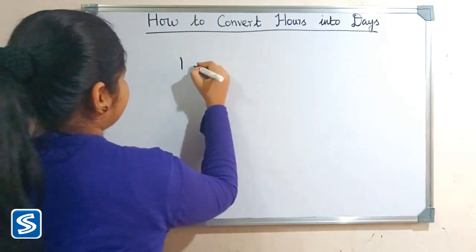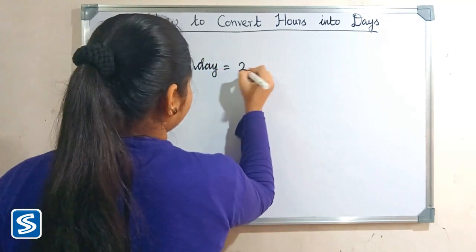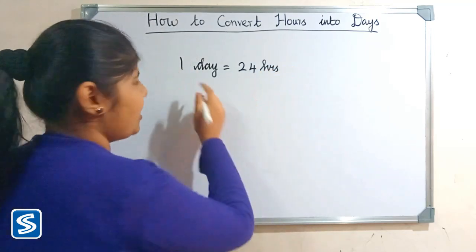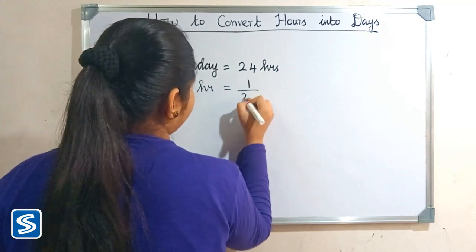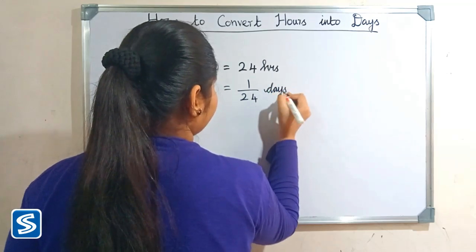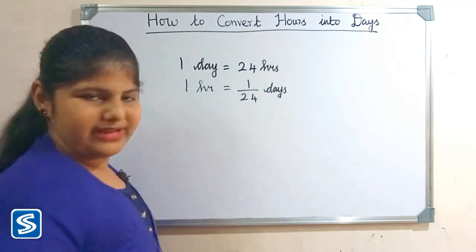We already know that one day is equal to 24 hours, so one hour is equal to one by 24 days. So this is the formula for converting hours into days.